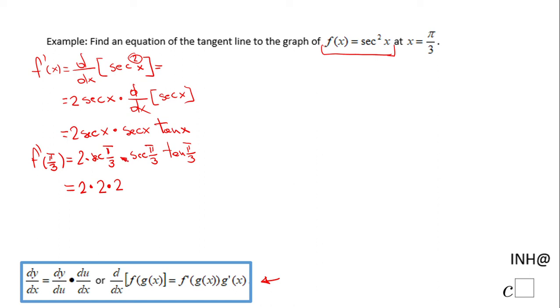Then we have tangent of pi over 3. It's sine of pi over 3, which is square root of 3 over 2, over cosine, which is 1 over 2. So that will be just square root of 3.